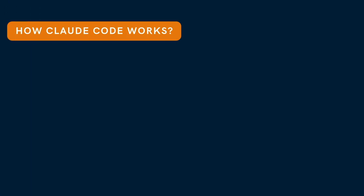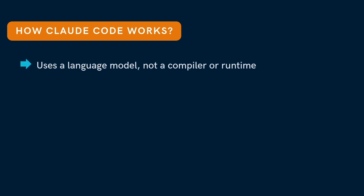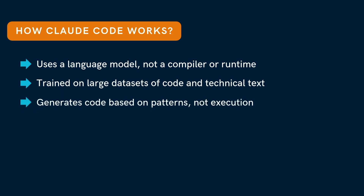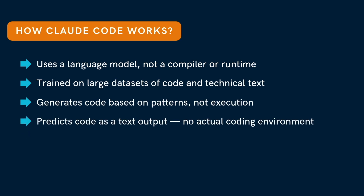Now let's understand how Claude Code actually works. Claude Code doesn't run or test your code — it's not a compiler or interpreter. It works by predicting what the right code should look like. It learned by looking at lots of examples of code and technical documents, which is how it knows what common patterns in programming look like. When it writes code, it's simply guessing the next best line based on what it has seen before. So it only gives you code as text, and you will have to test it and check for issues yourself.